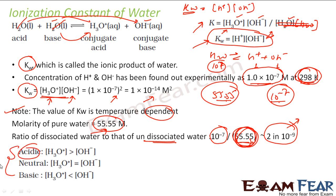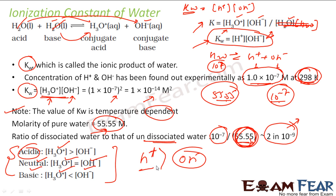To make a system acidic, the H+ ion concentration must be greater than OH- concentration. For a neutral system, H+ and OH- concentrations are equal. For a basic system, OH- concentration is greater than H+ concentration. When something is acidic it doesn't mean it has no OH- — it may have both, but H+ is more. For pure water at 298 K, both H+ and OH- are 10^-7 mol/L, so pure water is neutral.